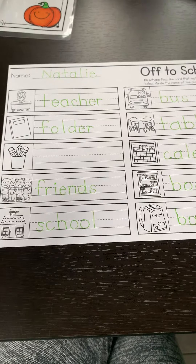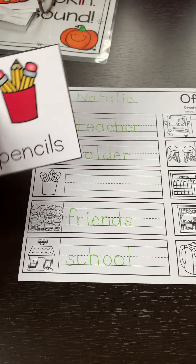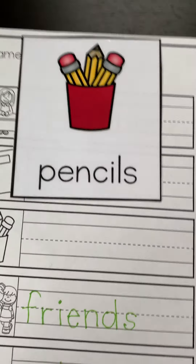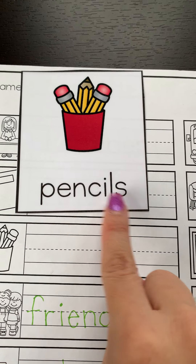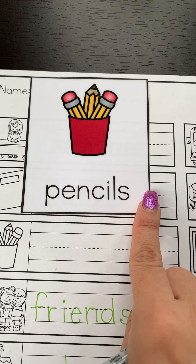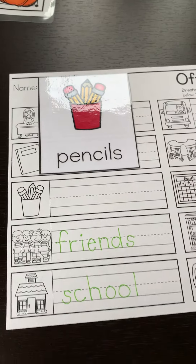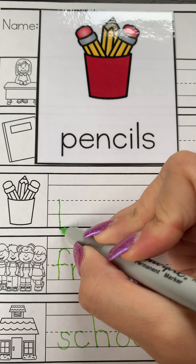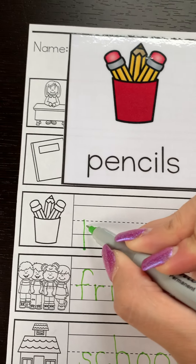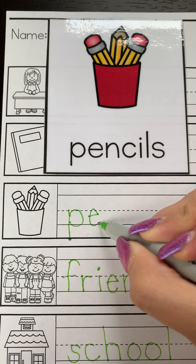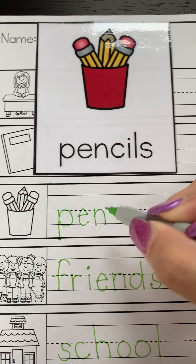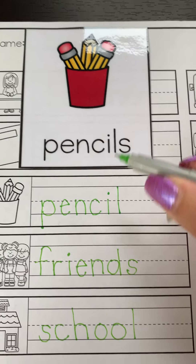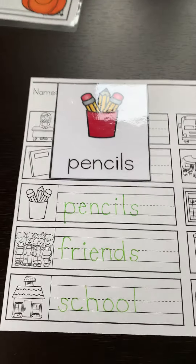The last word we need to do is 'pencils.' Pencils we use to write with. Since there is more than one pencil, it ends with an S. Pencils. P is a worm line letter — it breaks the rules and goes down below. See how it broke the rule and went past that line? P-E-N-C-I-L-S. Pencils.